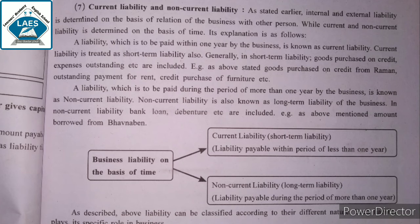Jo bhi liability hai, usko within one year mein pay karte hain, toh woh humare liye current liability hai. Current liability is treated as short-term liability also. Generally, in short-term liability — goods purchase on credit, expenses outstanding, and so on are included. For example, as stated: goods purchase on credit from Raman, outstanding payment for rent, credit purchase of furniture — yeh sab short-term ke liye, it means current liability.